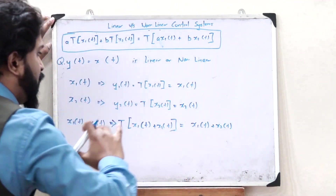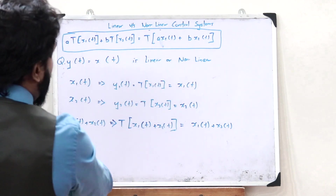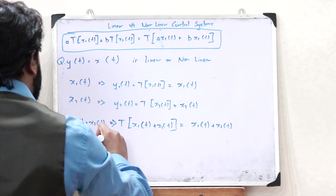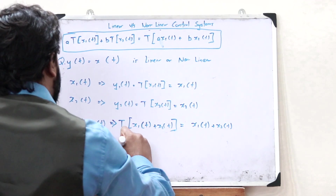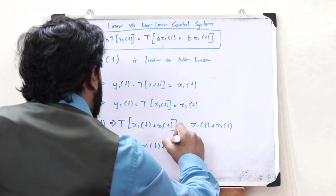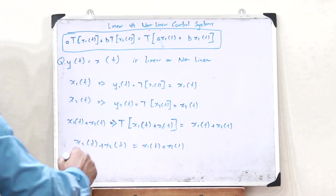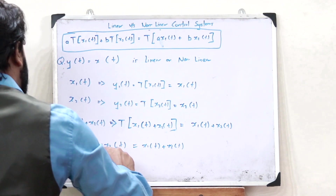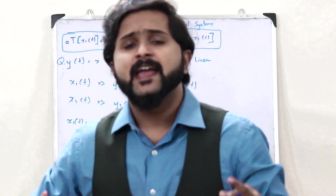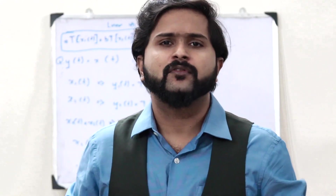We get x1(t) + x2(t) as output. When we compare this with the superposition principle, we get x1(t) + x2(t) equals x1(t) + x2(t). The LHS is equal to the RHS, and therefore this is a linear system. This is simply how we identify if a particular control system is a linear control system or a non-linear control system.